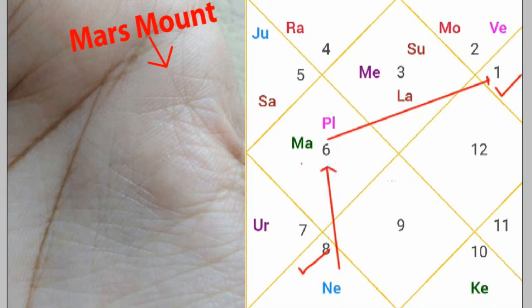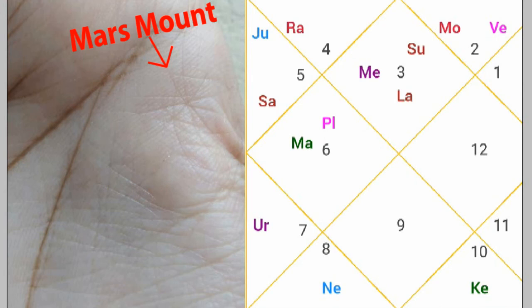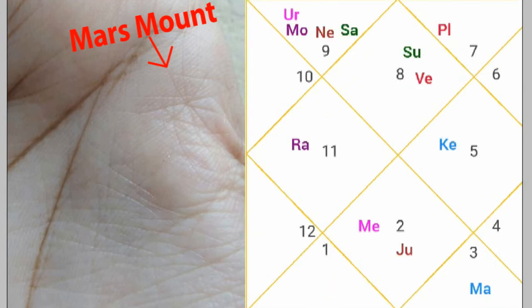Mars is the lord of the sixth house. The sixth house also represents the house of competition and house of court. So this person will also make uncertain money gain through legacy of asset sharing in the family, as the fourth house also represents the house of assets. Now we will show you the second horoscope, who has a star sign on his Mars mount.